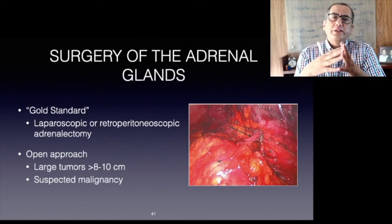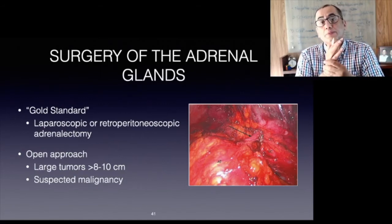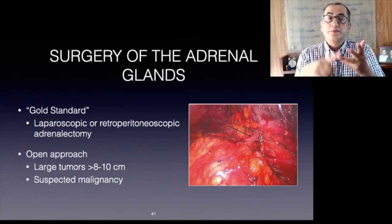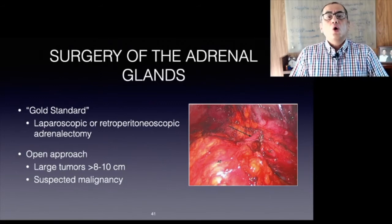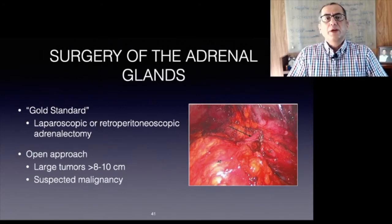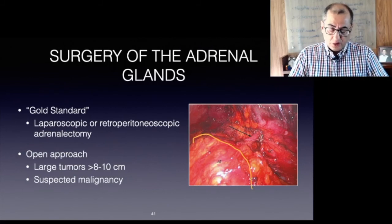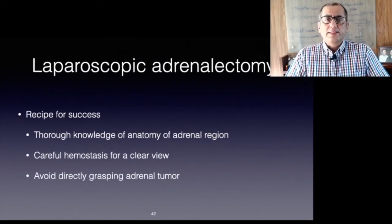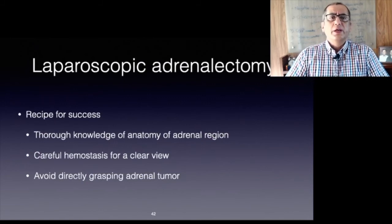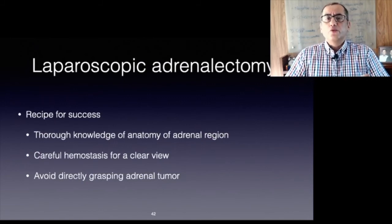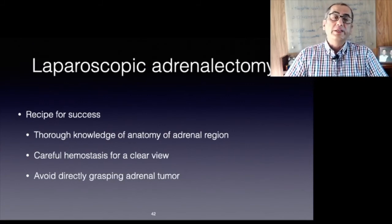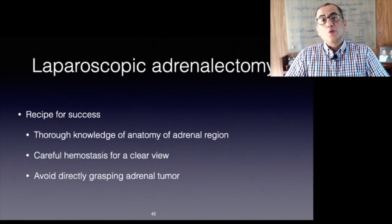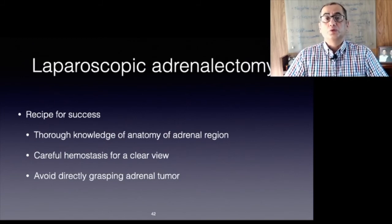The mortality rate ranges from 0 to 2 percent in specialized centers. An open approach is considered if radiological signs of distant metastases, large tumors greater than 8 to 10 centimeters, or a hormonal pattern suggesting malignancy are present; surgical access in these cases is usually thoracoabdominal. Knowledge of the adrenal region anatomy is essential — if landmarks are respected, injury to the inferior vena cava, renal vein, pancreatic tail, or spleen can be avoided. Careful hemostasis is essential, and direct grasping of the adrenal tissue or tumor must be avoided to prevent spillage.